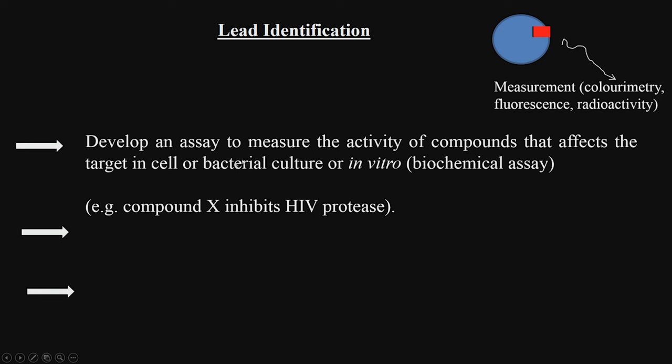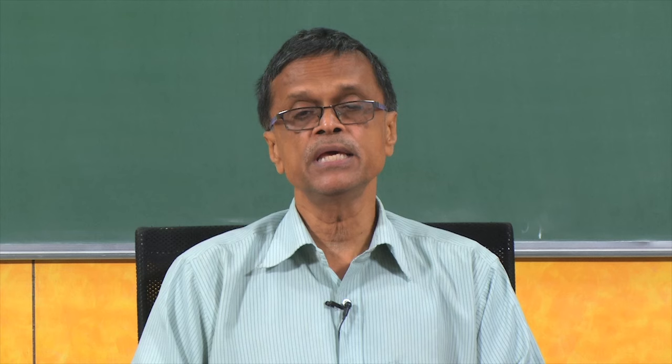You need to develop an assay — an experimental procedure to measure the activity of the compounds that affect the target. When a compound binds to the active site of a protein or enzyme, there is a change: colorimetry, fluorescence, radioactivity, or some biochemical change which you could measure using bacteria or animal cells in the lab. You need to develop that assay if you want to test different molecules for inhibition of a particular target.